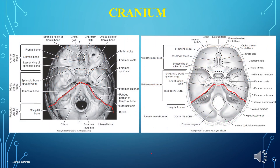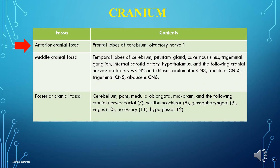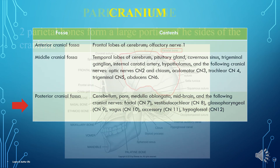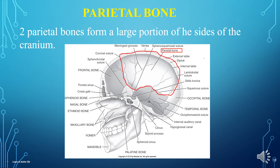Quick Reveal: Anterior cranial fossa contains the frontal lobes of the cerebrum and the olfactory nerve (cranial nerve 1). Middle cranial fossa contains the temporal lobes of the cerebrum, pituitary gland, cavernous sinus, trigeminal ganglion, internal carotid artery, hypothalamus, and cranial nerves CN2 through CN6. Posterior cranial fossa contains the cerebellum, pons, medulla oblongata, midbrain, and cranial nerves CN7 through CN12.